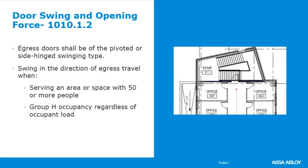Egress doors shall be of the pivoted or side-hinge swinging type unless by exception. They need to swing in the direction of egress when serving an area of 50 or more people regardless of occupancy type, and for Group H high hazard occupancy regardless of the occupant load.